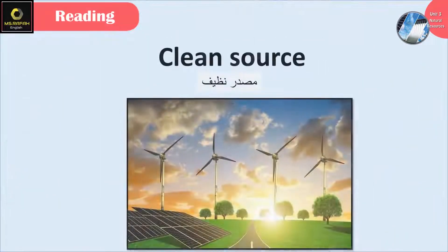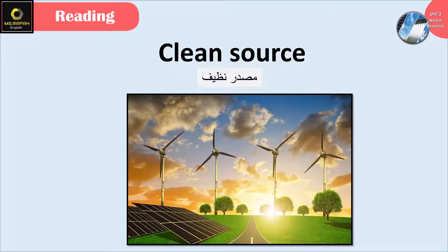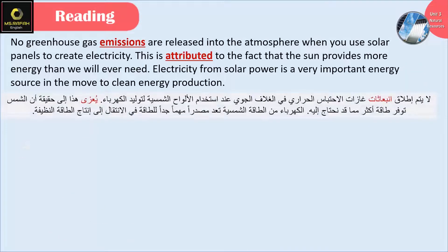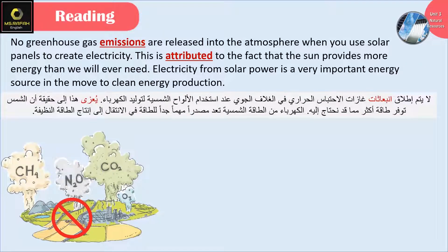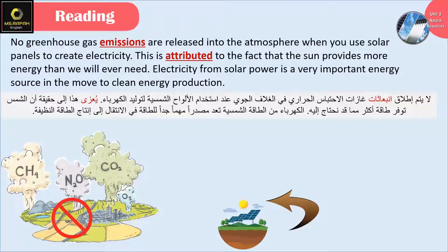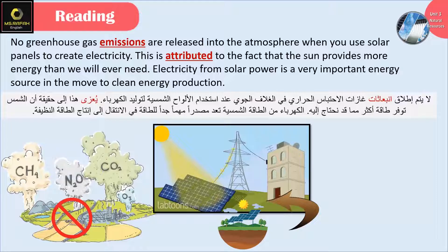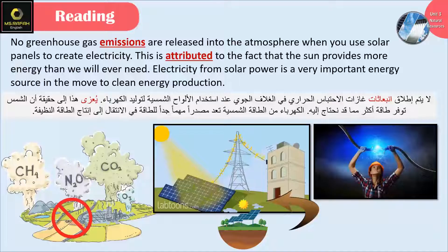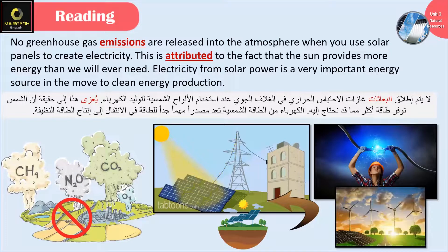Clean source. No greenhouse gas emissions are released into the atmosphere when you use solar panels to create electricity. This is attributed to the fact that the sun provides more energy than we will ever need. Electricity from solar power is a very important energy source in the move to clean energy production.